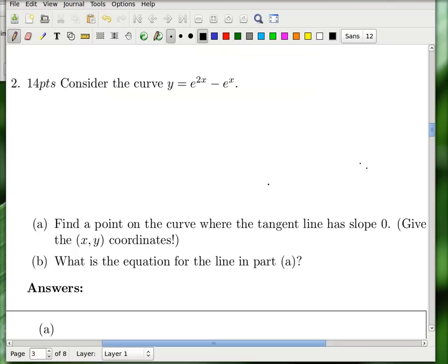So the first thing we probably want to do is take the derivative, right? Because the derivative tells you what the slope of the tangent line is. So what is y prime? Y prime is, so we're going to do a little chain rule action here.